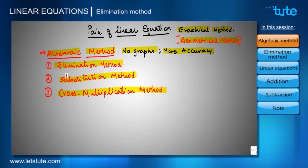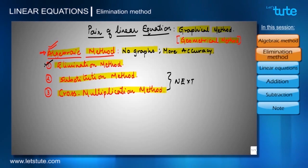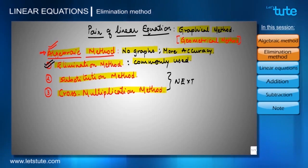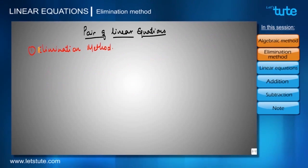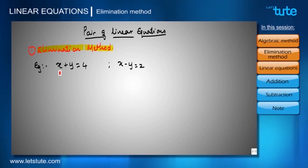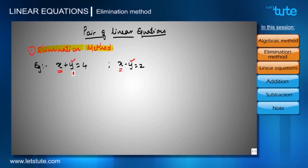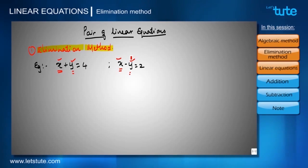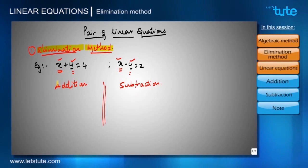You can use any of these methods whichever is suitable when asked to solve by algebraic method. The substitution and cross multiplication methods we'll learn in the next sessions. Now we'll learn the elimination method, which is the most commonly used method. To understand elimination method, let's consider an example: x plus y equals 4 and x minus y equals 2. In this method, we eliminate one variable from both equations to get the value of the other variable.